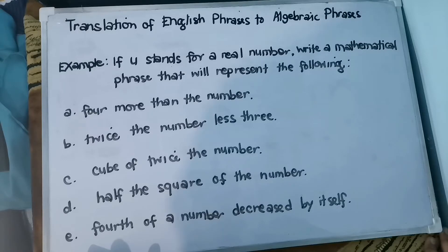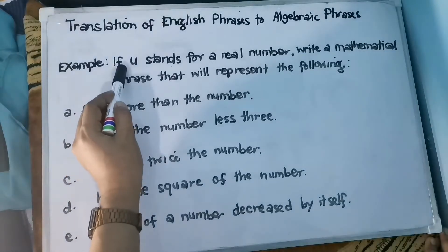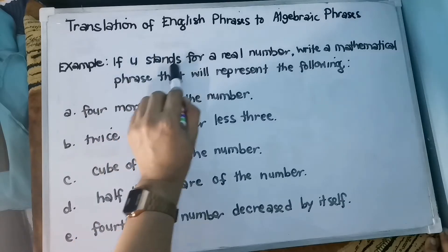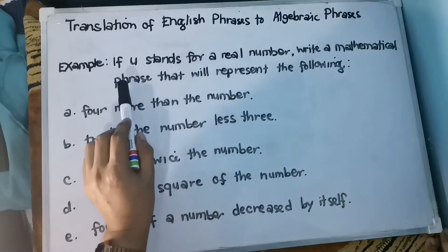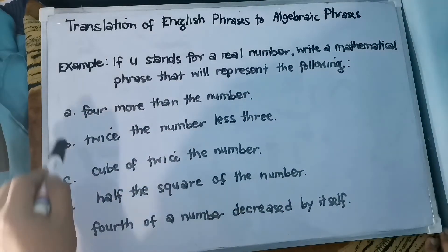Those are the keywords you need to remember in order to translate English phrases to algebraic phrases. I have examples here. You can use any letter in the English alphabet as your variable to represent the unknown value. We are going to use u as our variable that stands for a real number, and write a mathematical phrase for each of the five examples — letter A to E.